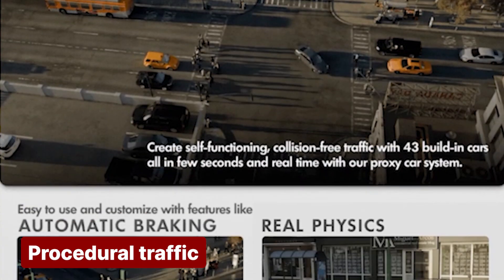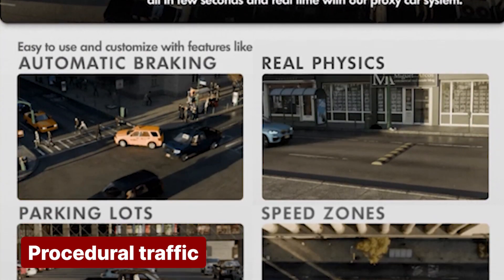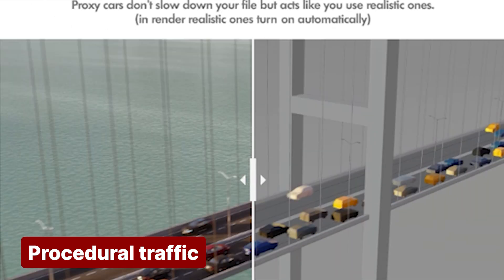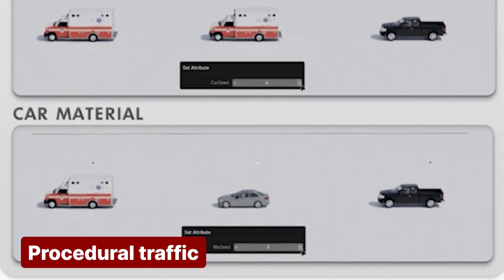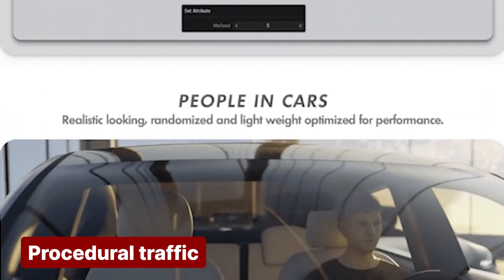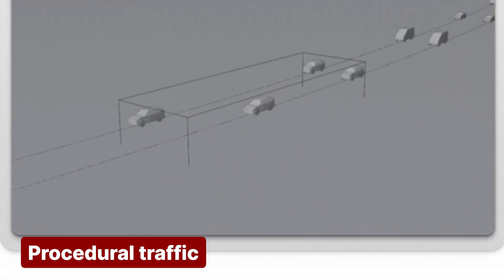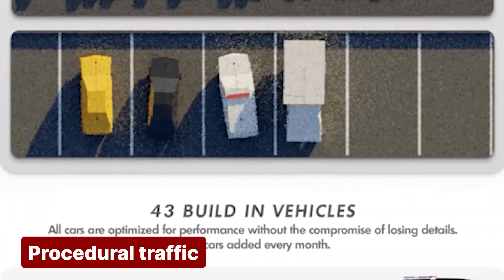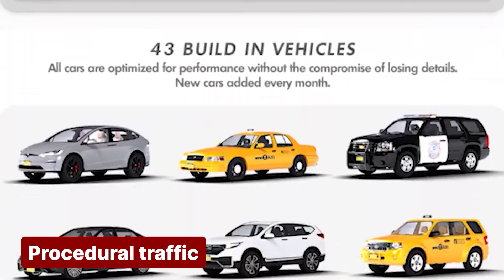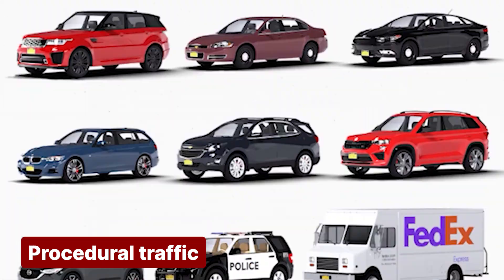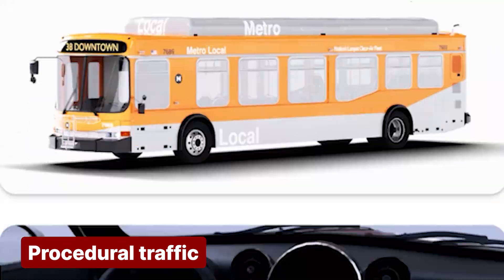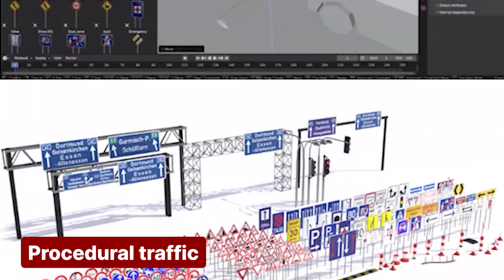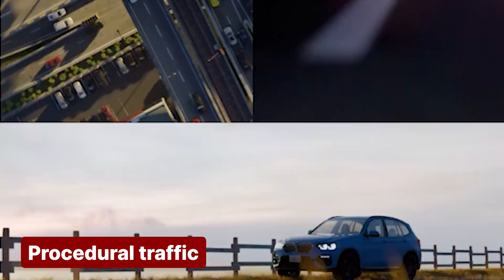Speaking of crowds, you can also simulate street traffic to create a bustling city. The Procedural Traffic add-on comes with a catalog of over 43 fully rigged cars that respond to traffic behavior. These vehicles can avoid collisions, respect traffic rules, change lanes, and include physics-based interactions. The latest update adds features like speed zones, individual car controls, and much more.